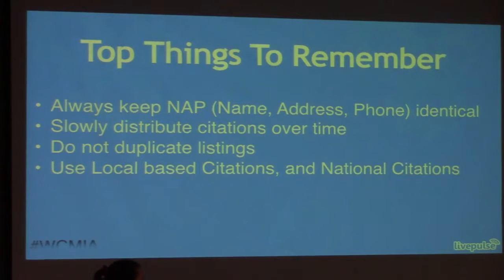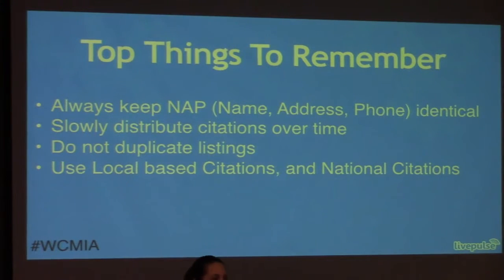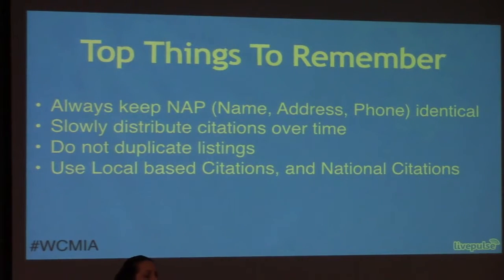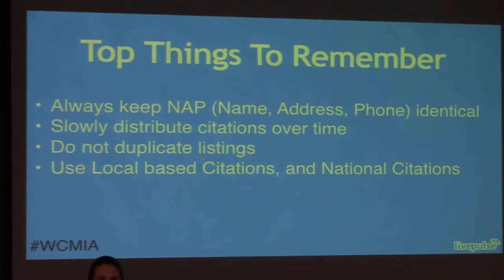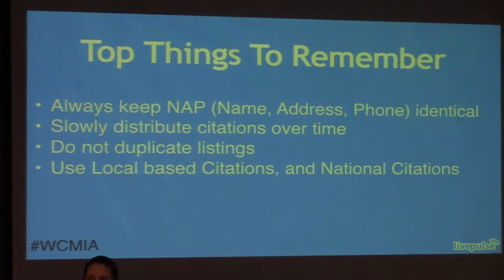Top things to remember: always keep your name, address, and phone number the same. Slowly distribute these citations over time. When I run a report for a new client, we'll typically see 60 to 100 available citations for a brick-and-mortar business who's never done any citation building before. I schedule 10 a month, so for 6 to 10 months we have this steady, slow addition of citations. I use a service that charges me $30 every time I do 10 — so it's just $30 a month for 6 months. When we're going to almost double the number of people who walk through your door, it's totally worth it in the long run.